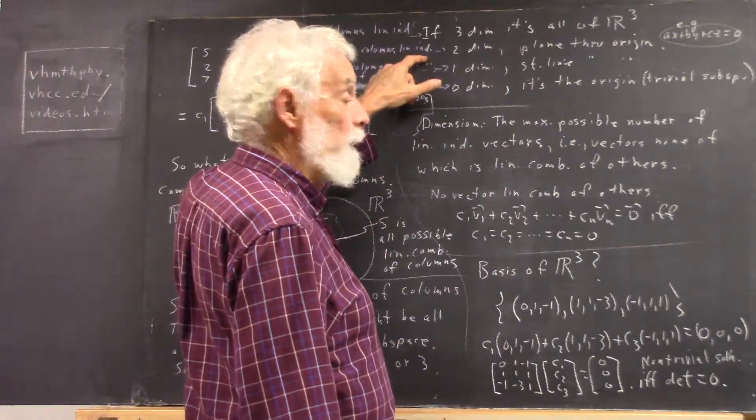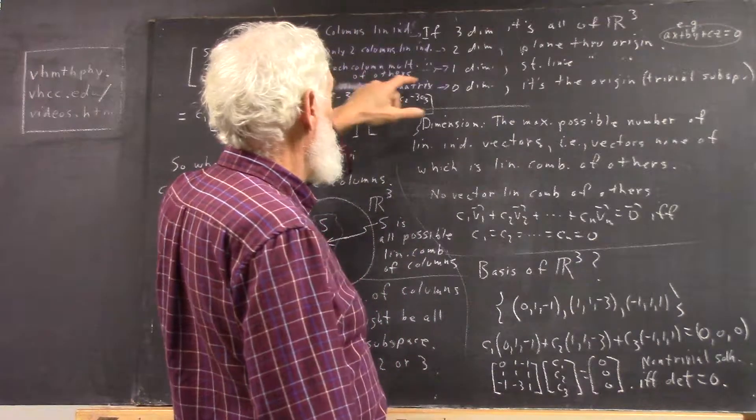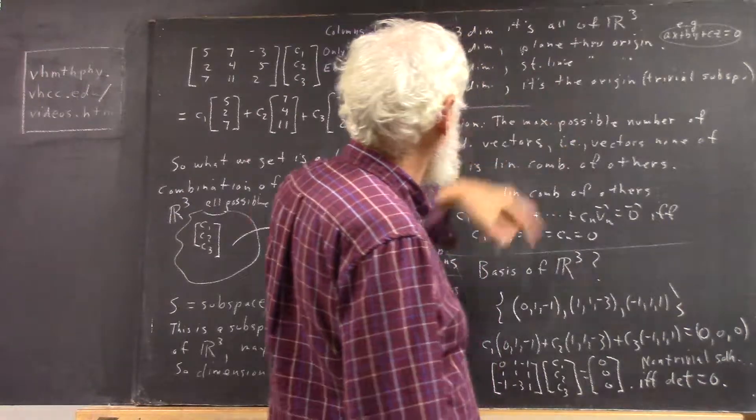Subspace is all of R3. Two columns linearly independent but not three, then it's a plane through the origin. Each column multiple of the others, everything else is a straight line through the origin.